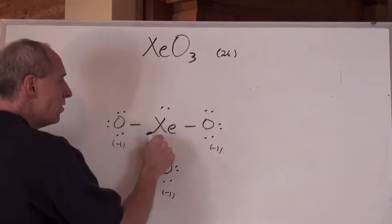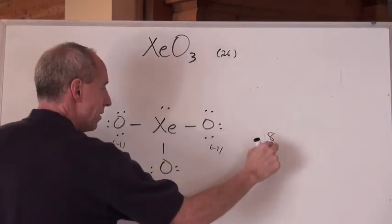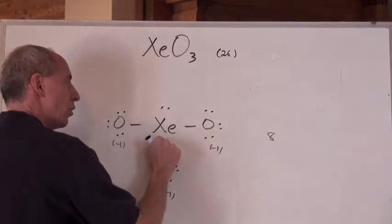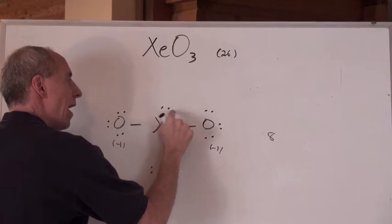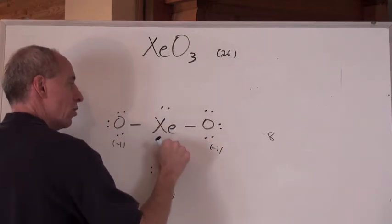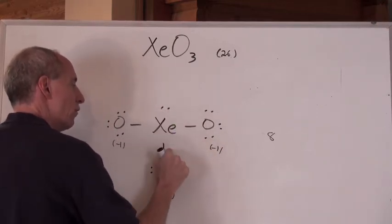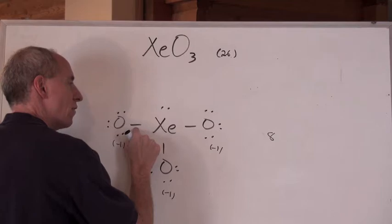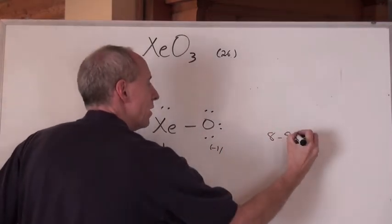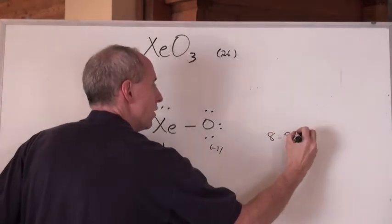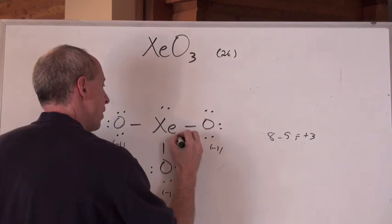Now, what's the xenon? It's normally in group 8, but here, what do we assign it? 2 lone pair electrons, and then half of the bonding electron totals — so 2, 3, 4, 5. 8 minus 5 equals plus 3. So that's a plus 3.